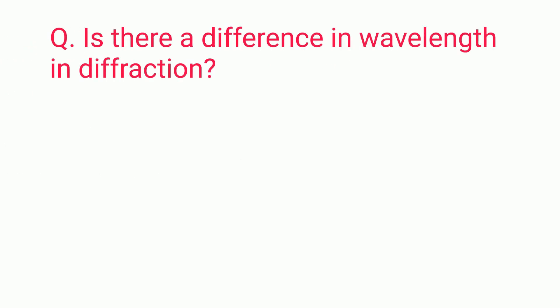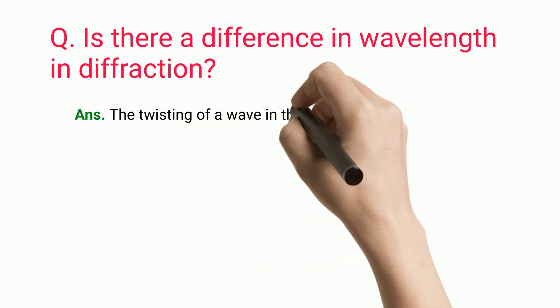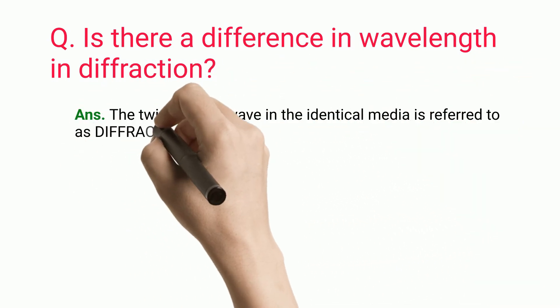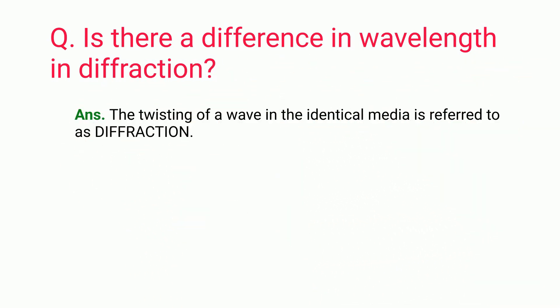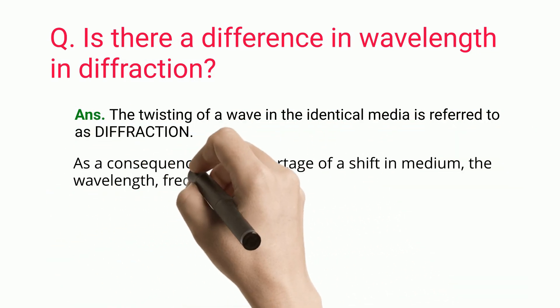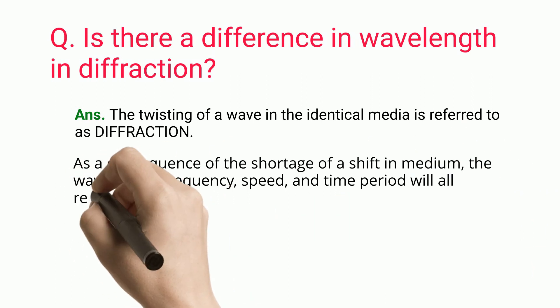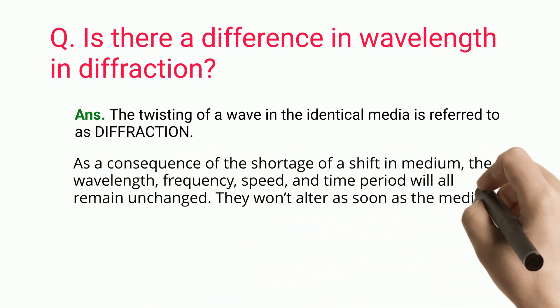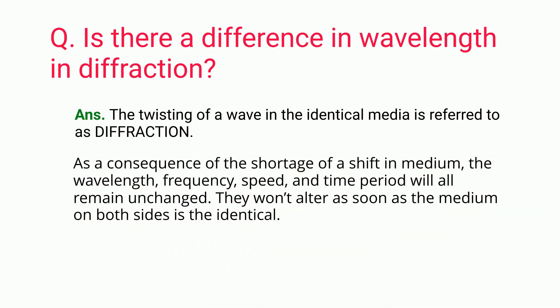Question: Is there a difference in wavelength and diffraction? The twisting of a wave in the identical media is referred to as diffraction. As a consequence of the shortage of a shift in medium, the wavelength, frequency, speed, and time period will all remain unchanged. They want to alter as soon as the medium on both sides is the identical.